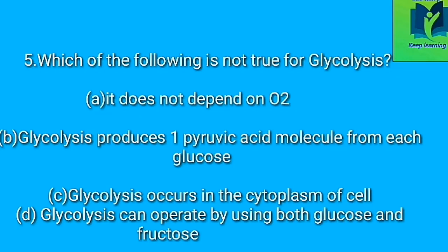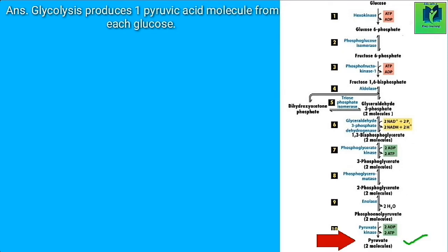Which of the following is not true for glycolysis? Option A: It does not depend on oxygen. Option B: Glycolysis produces 1 pyruvic acid molecule from each glucose. Option C: Glycolysis occurs in the cytoplasm of cell. Option D: It can operate by using both glucose and fructose. Answer: Option B, because glycolysis produces 2 pyruvic acid molecules from each glucose.